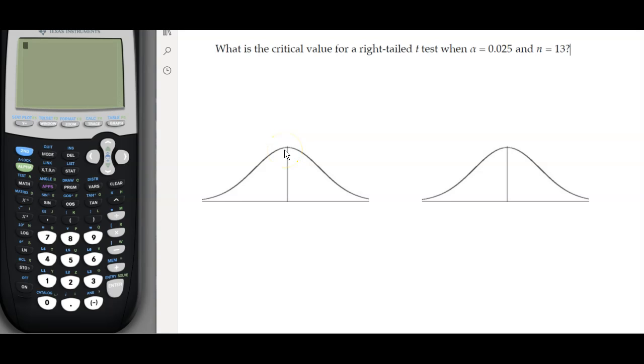In this video we're going to find the critical value of a right-tailed t-distribution. Alpha is 0.025 and n is 13. We start with the degree of freedom, which is equal to